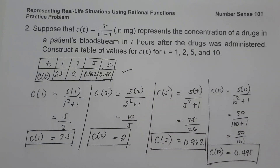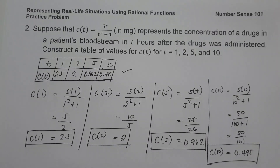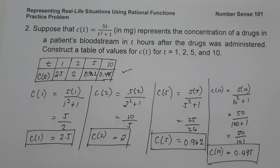If we interpret the table, it indicates that the maximum drug concentration occurs around 1 hour after the drug was administered. After 1 hour, the table suggests that the drug concentration decreases until it is almost 0. That will be our answer.